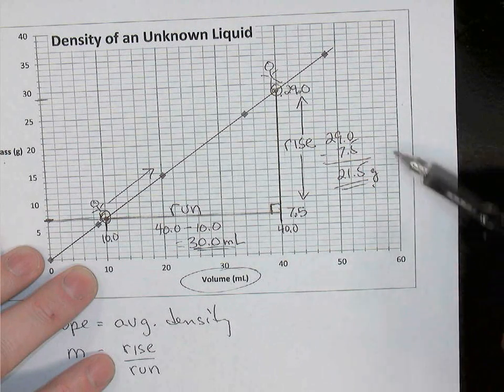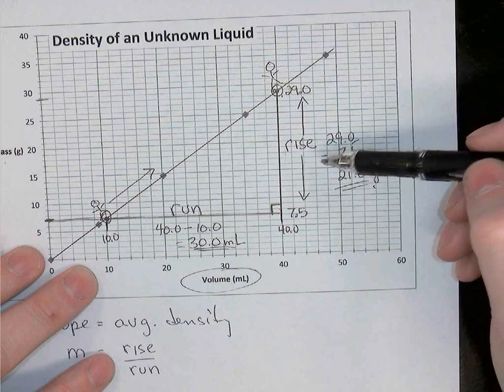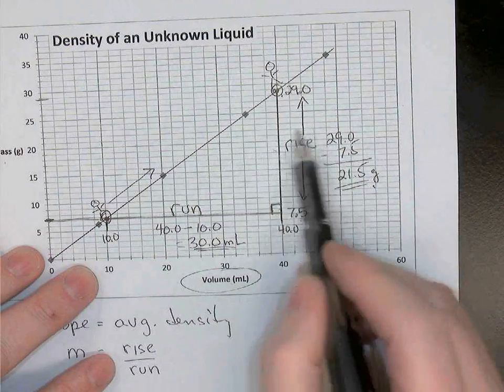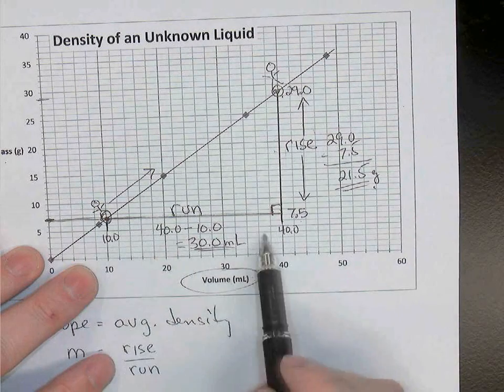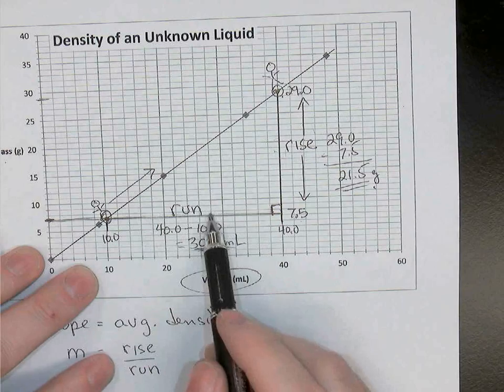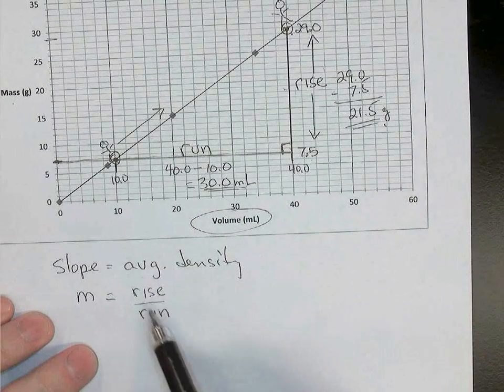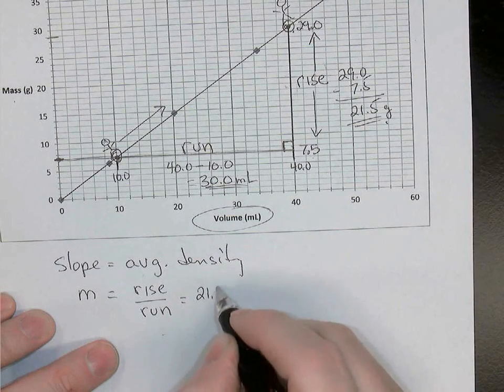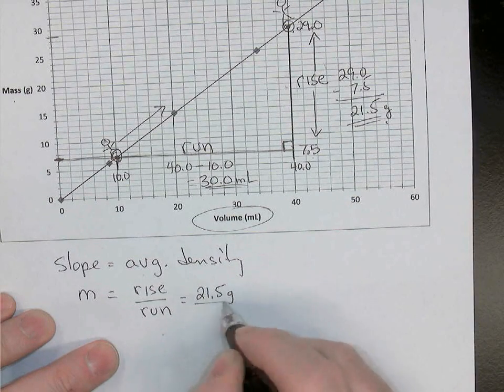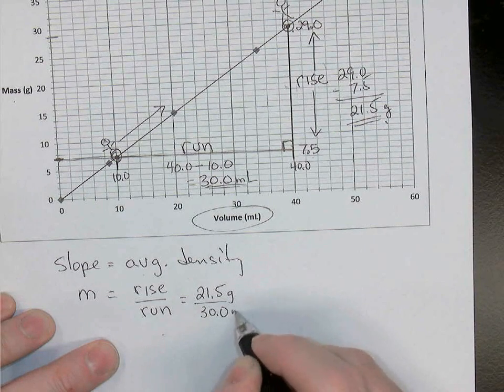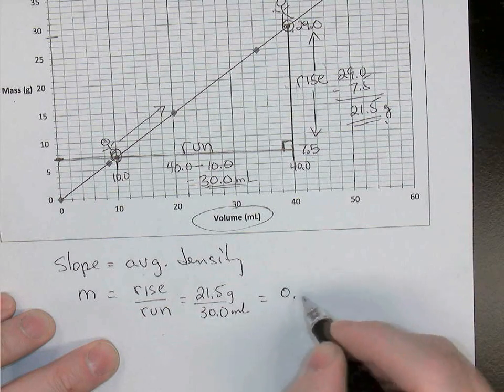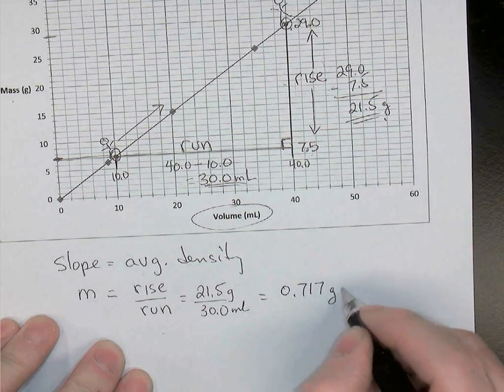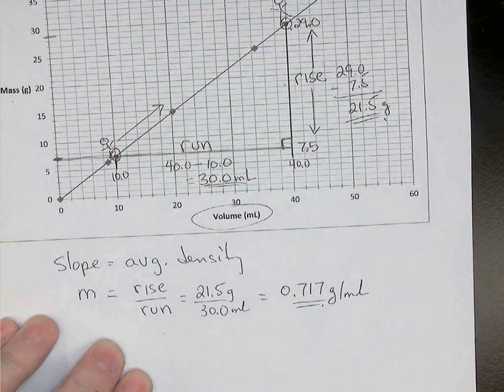So if you take a look at what we've just done, we're essentially doing the same thing. We're subtracting these two y values, but now we're calling that the rise. Then we're subtracting the two x values and we're calling that the run. So now when we put our rise over run, you'll see that we're essentially doing the same thing. We're taking 21.5 grams divided by 30.0 milliliters and so we're going to get the same answer 0.717 grams per milliliter as our average density.